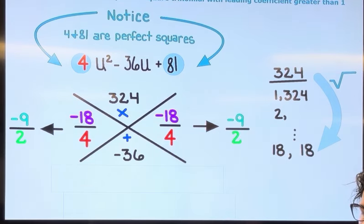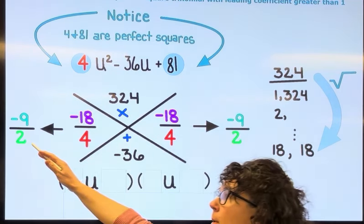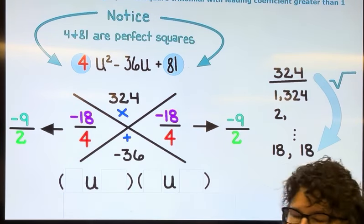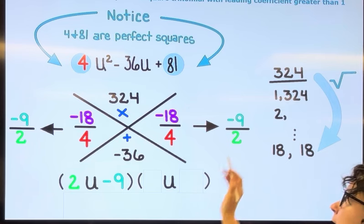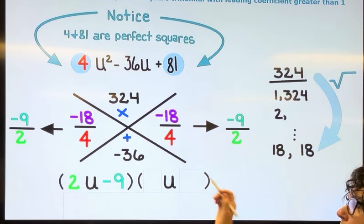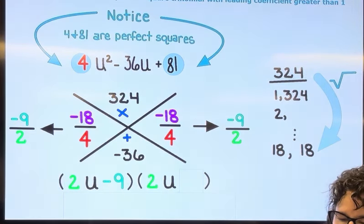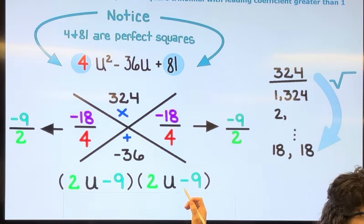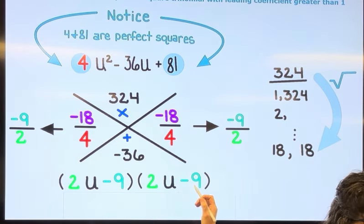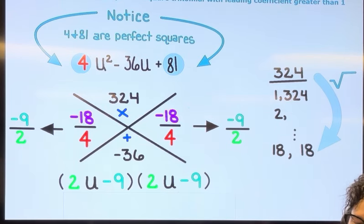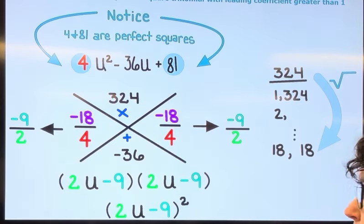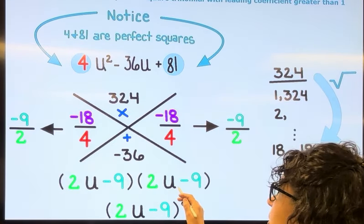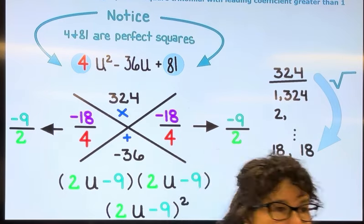We're ready to factor. The bottom number goes in the front. The top number goes in the back. So I have 2u minus 9 and then 2u minus 9. They're identical. So our final answer, since they're the same, we're going to write this as 2u minus 9 quantity squared. Of course, you can foil this back together to verify that you get back to the original.